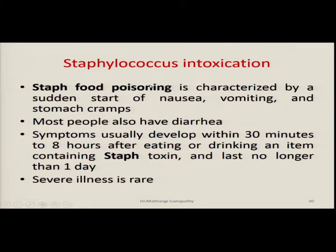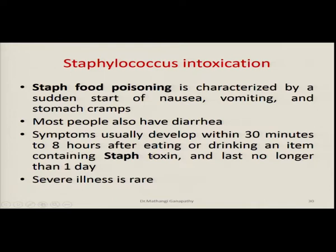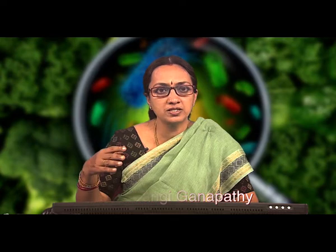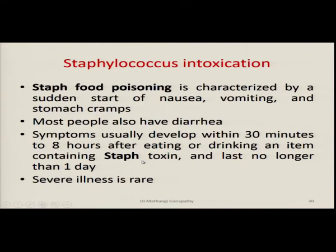The first we are going to talk about is Staphylococcus intoxication. Staph food intoxication or food poisoning is characterized by a sudden onset of nausea, vomiting and stomach cramps. Most people who get the disease also have diarrhea. Symptoms usually develop within 30 minutes to 8 hours after eating or drinking an item containing Staphylococcus toxin. It is not the live Staphylococcus causing the disorder, but the toxin secreted by staph which is present in contaminated food or water. The disorder normally lasts not longer than a day.